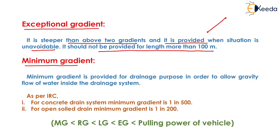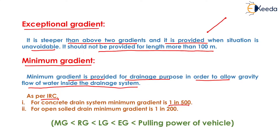The next is minimum gradient. Minimum gradient is provided for drainage purposes in order to allow gravity flow of water inside the drainage system. As per Indian Road Congress, for a concrete drain system, minimum gradient is 1 in 500, and for open soil drain, minimum gradient is 1 in 200.